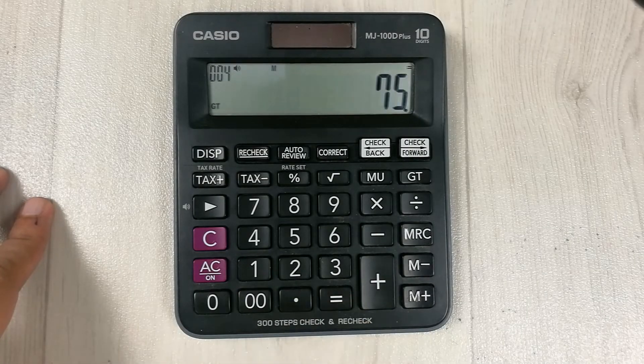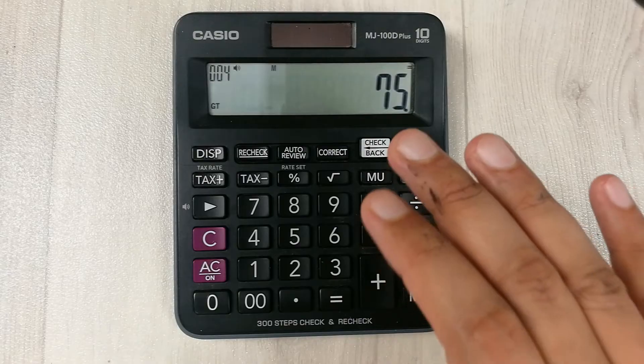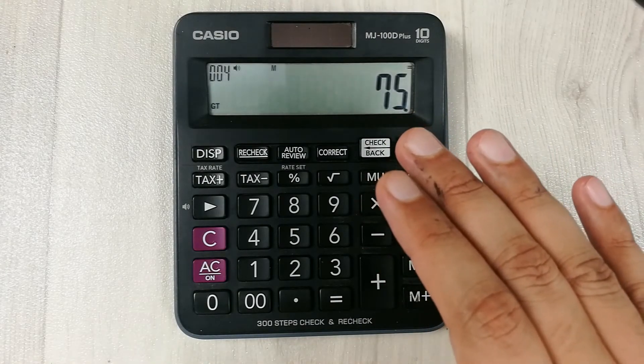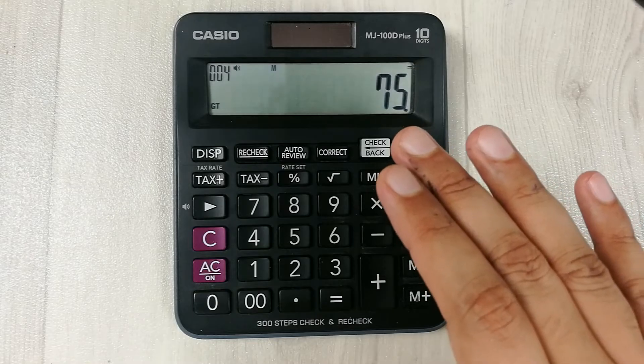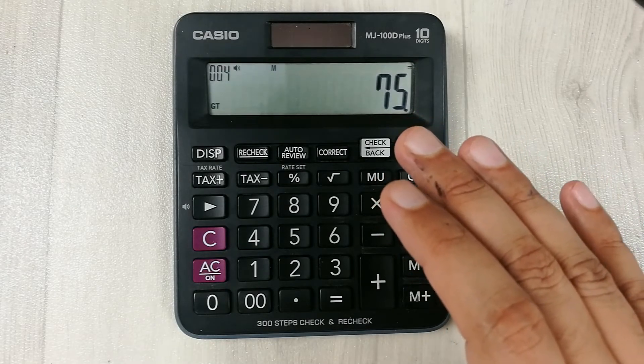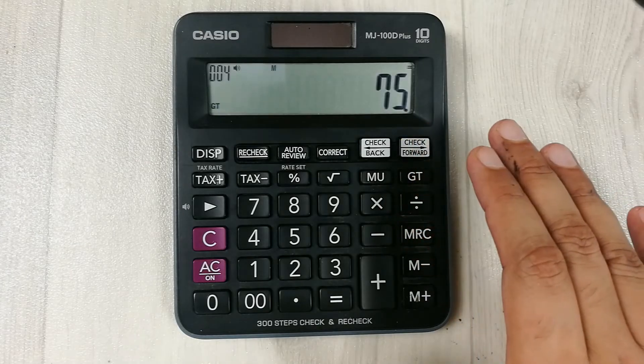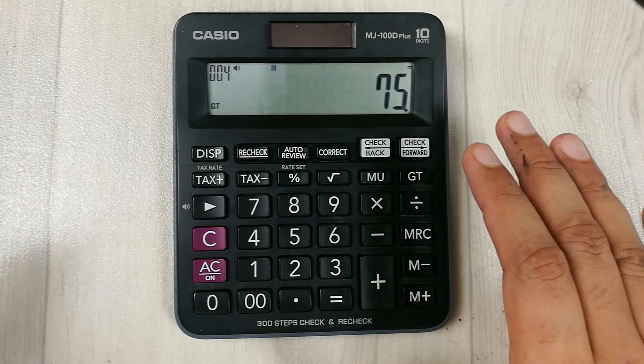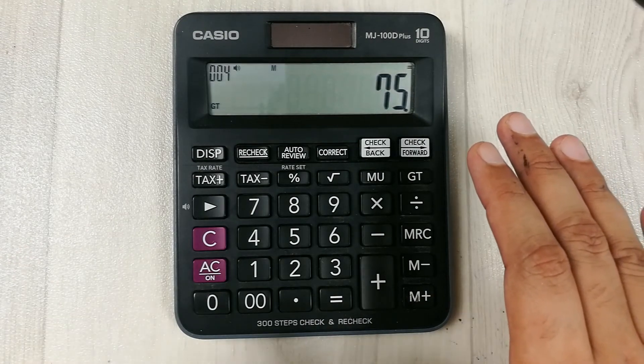And then press equals. So guys, this is our profit percentage. If you write it on paper, you write it as 75 percent. This is how you can calculate the profit percentage if cost price and selling price is given on your calculator.